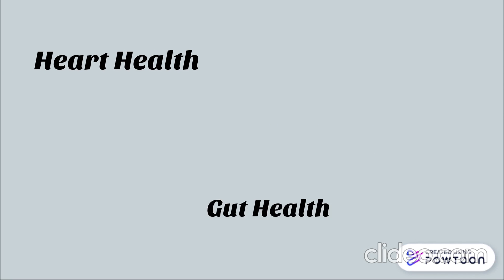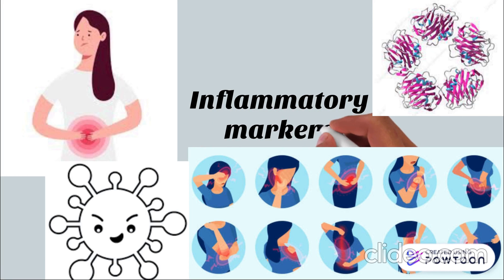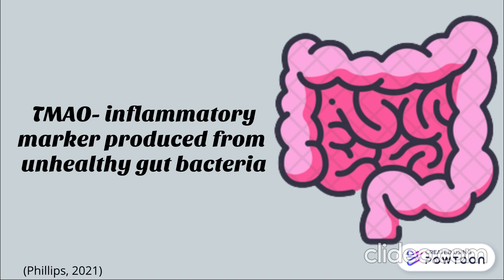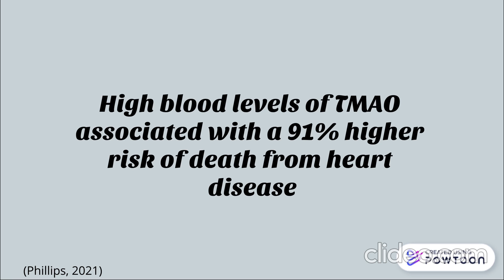Now we are going to focus on the link between heart health and gut health. It's important to understand what inflammation and inflammatory markers are. Inflammation plays a large role in short-term and long-term illnesses, and scientists have discovered ways to identify and detect the level of inflammation in the body using inflammatory markers. Common inflammatory markers include blood counts such as the white blood cell count, hemoglobin count, and levels of C-reactive protein. In the gut lies 70% of the body's inflammatory markers. There is one marker called TMAO — an inflammatory marker produced from unhealthy gut bacteria. High levels of TMAO in the gut are associated with a 62% higher risk of heart stroke and attack, and a 91% higher risk of death from all causes.